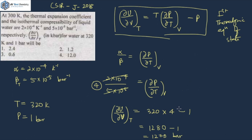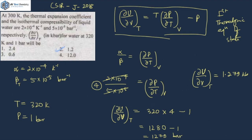The answer is asked in kilobars, so divide by 1000. Your del U by del V at constant T comes out as 1.279 kilobar. The correct answer for this question is option number two.